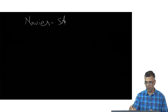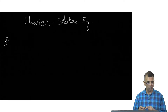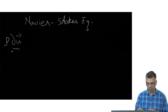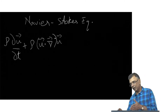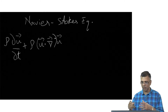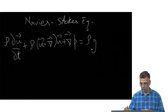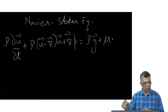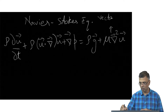Let me write down the Navier-Stokes equation once again in lab coordinates in the Eulerian frame. We have the du/dt plus u dot del term, and instead of writing the pressure gradient on the right-hand side with a negative sign, I choose to write it here. This will be the body force and mu, where I want to emphasize that this is a vector Laplacian.